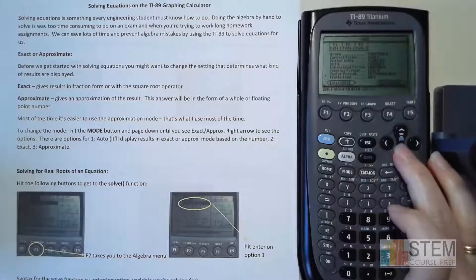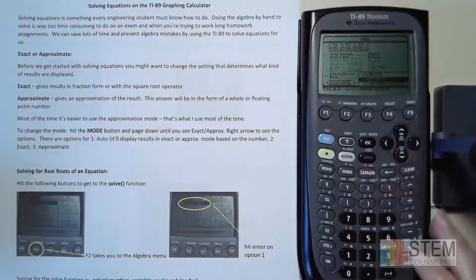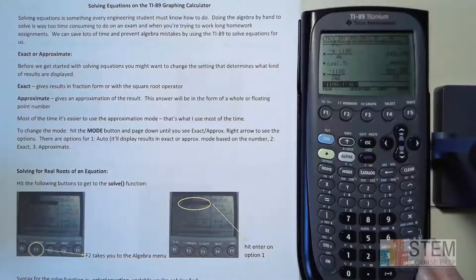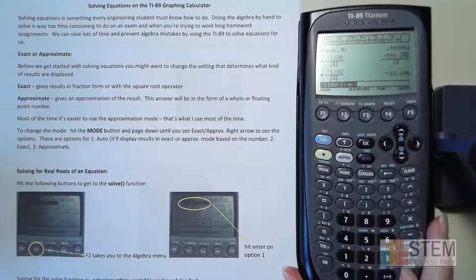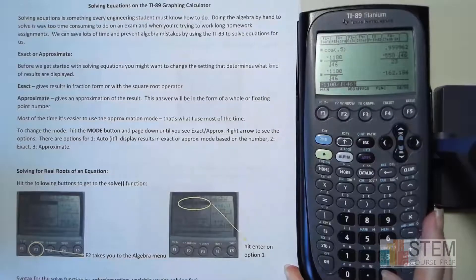Let's go back to mode and switch over to approximate. Now let's do that same calculation — just hit enter. Look what you get: negative 162.186. I think that is a lot more informative, so that's why I'm going to use approximate mode.